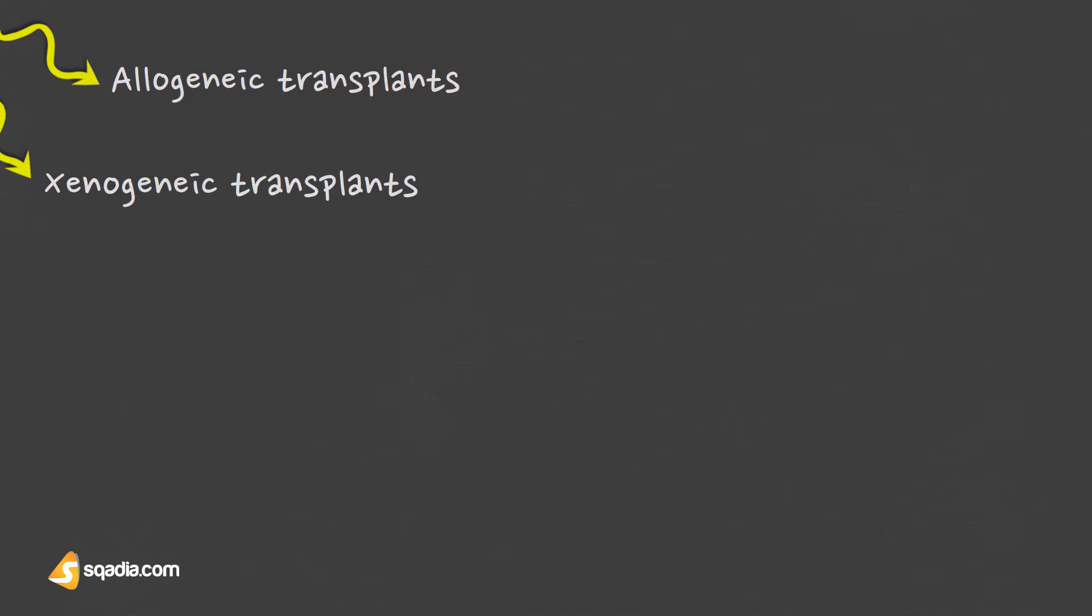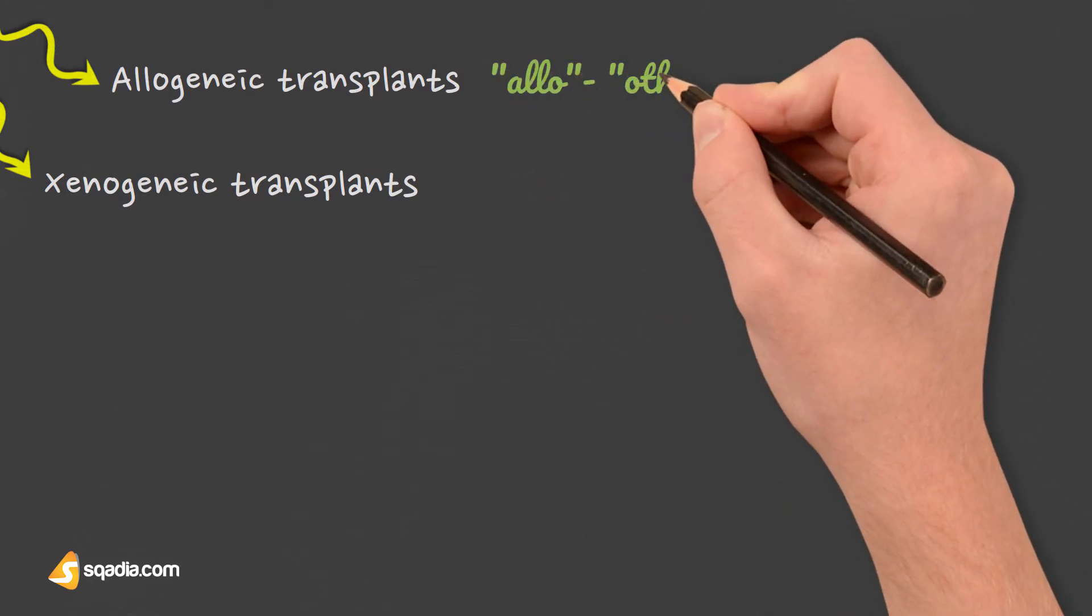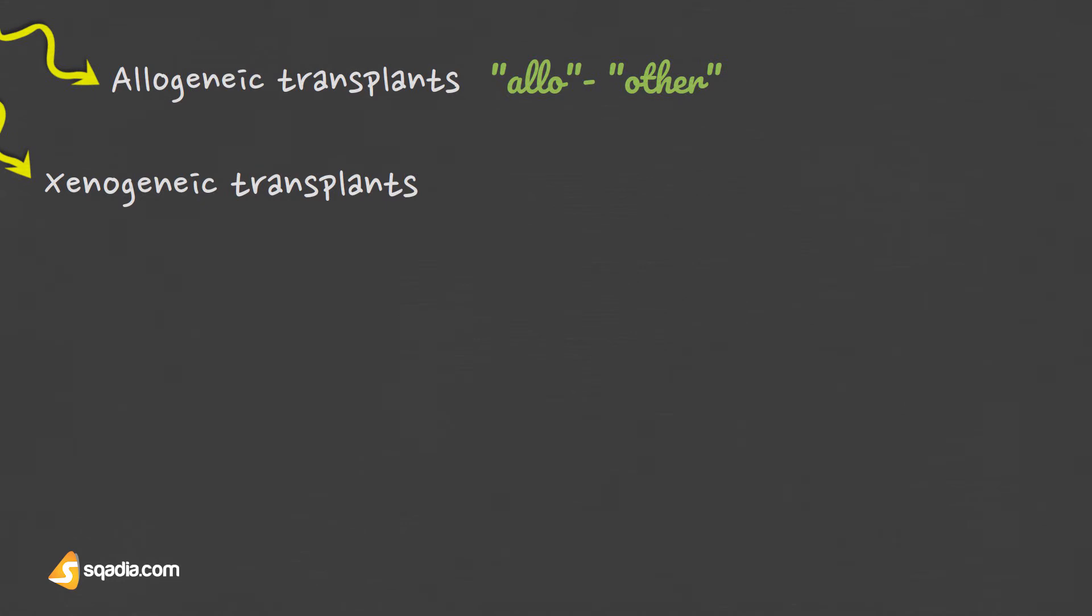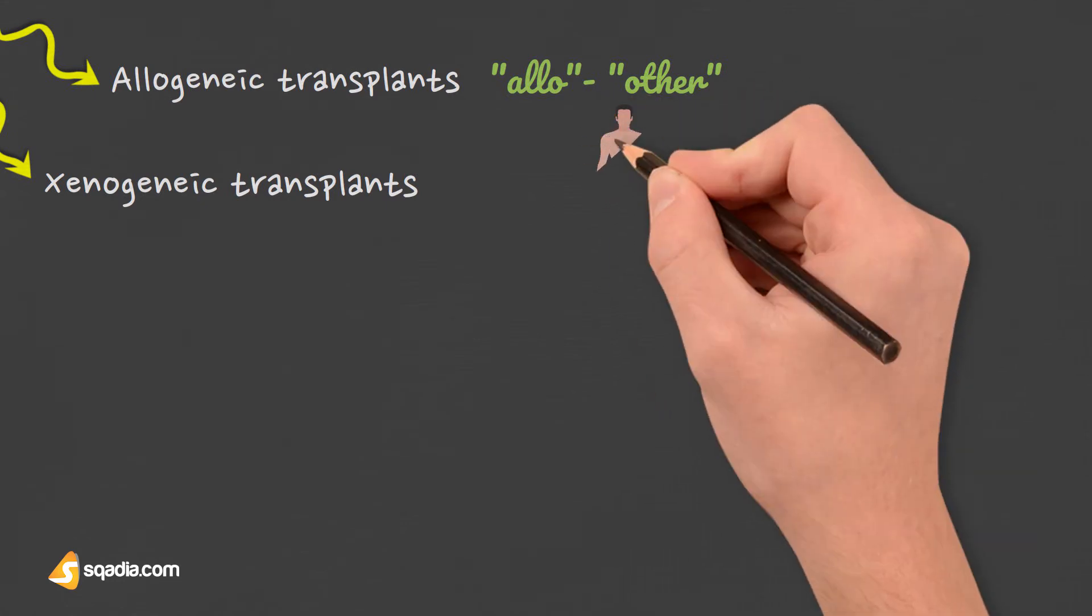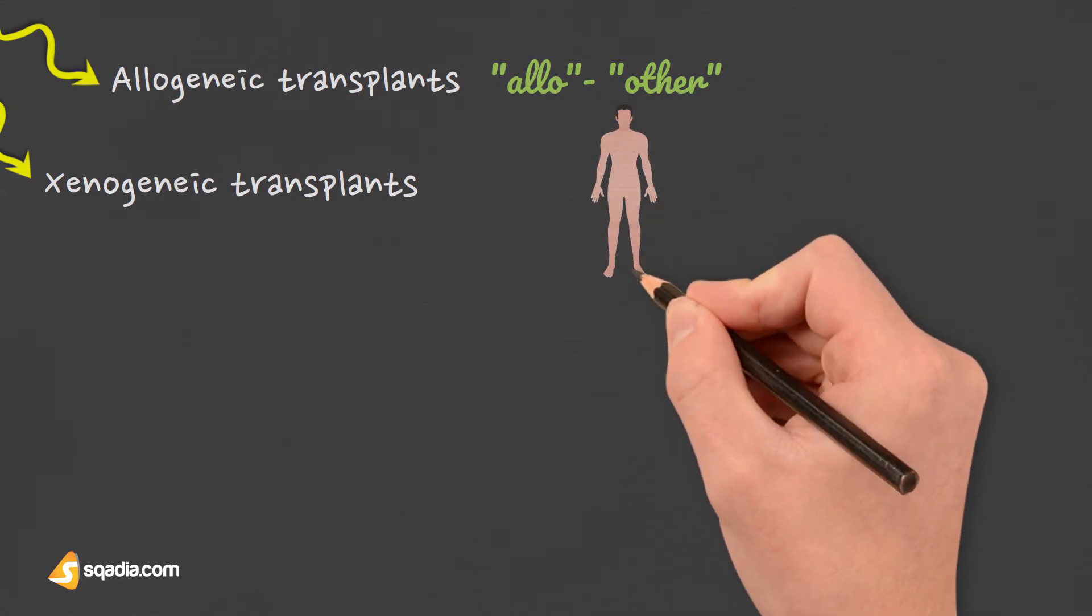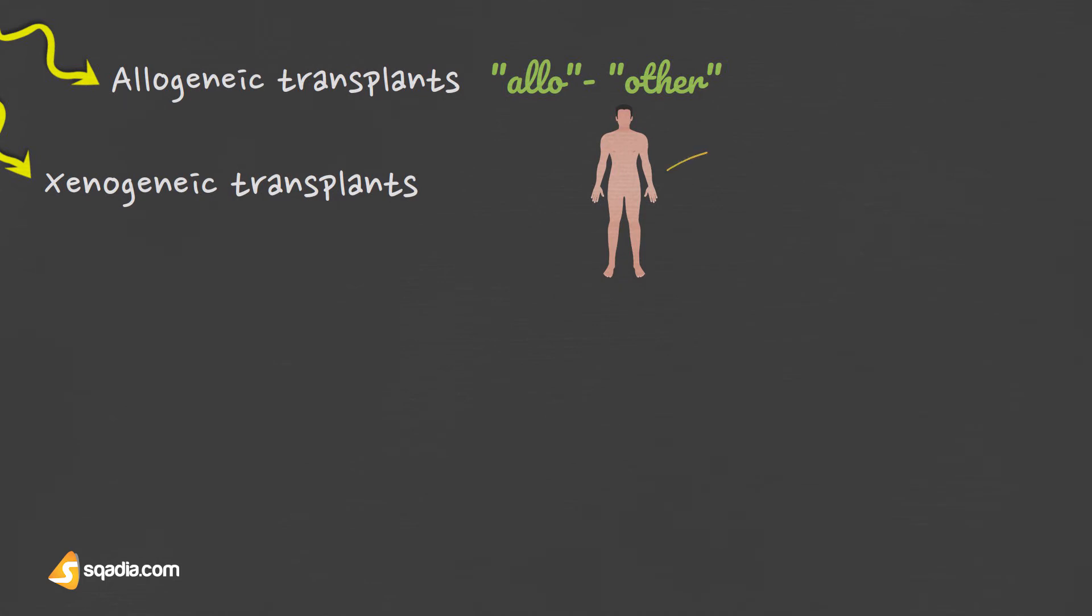Then we have allogenic transplants or homografts. Allo means other in Greek. This can be described as a transfer between genetically different individuals but within the same species, for example one human to another.